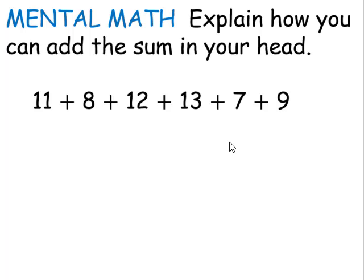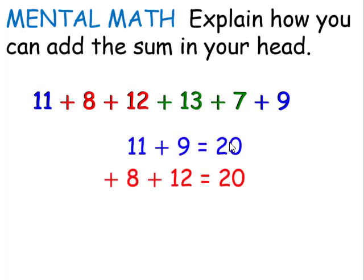Explain how you can add the sum in your head. You may want to pause before I begin. Let's take a look. We should notice that 11 plus 9 is 20, positive 8 plus 12 is also 20, and positive 13 plus 7 is also 20. 20 plus 20 plus 20 or 20 times 3 is 60.